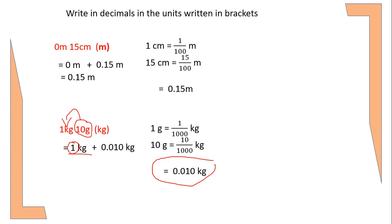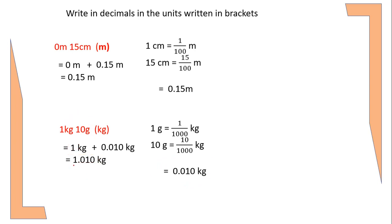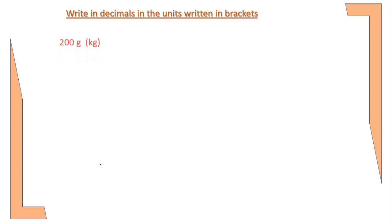I will add 0.010 kg to 1 kg, adding whole number to whole number. The whole number part will be 1, and the decimal part 010 comes as it is. Hence the final answer is 1.010 kg.